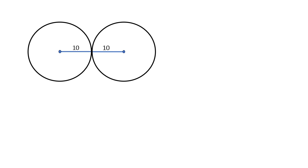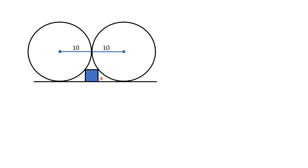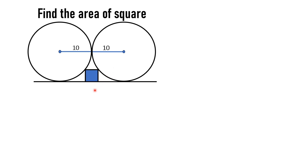In this video we are given two circles which are identical, each having radius 10 units. These circles are tangent to each other at one point. If we draw a line segment that is tangent to each circle, there is a square stuck between the two circles and the tangent line. From this given data, we have to find the area of this square.